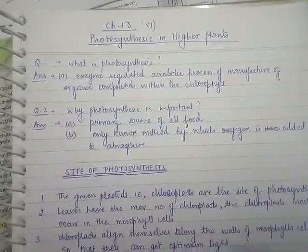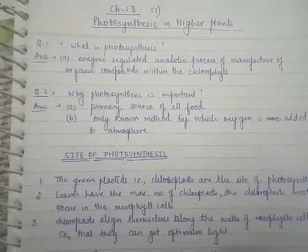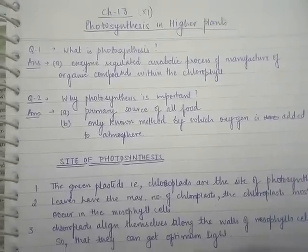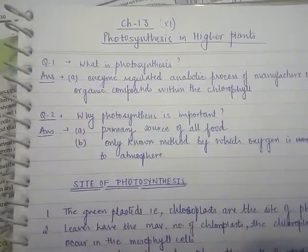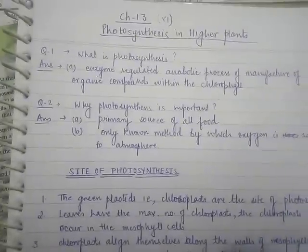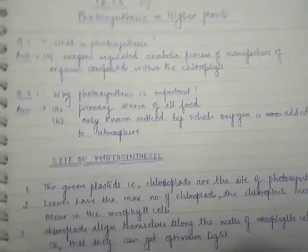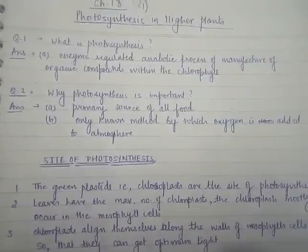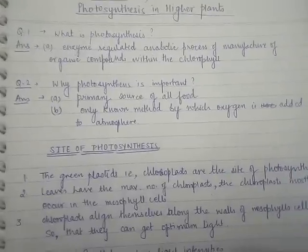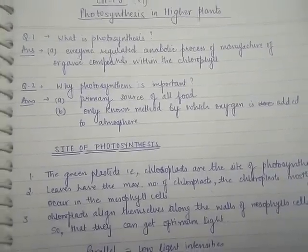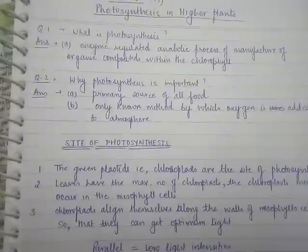Hello friends. We are going to cover chapter number 13, that is Photosynthesis in Higher Plants. The main focus of this video is important topics for NEET 2017 exam. In this first video, the main topic is: what is photosynthesis? Photosynthesis is an enzyme-regulated anabolic process. Anabolic means building-up reactions or mechanism.